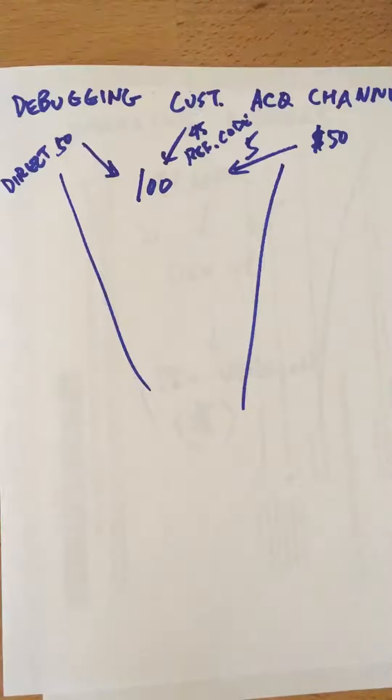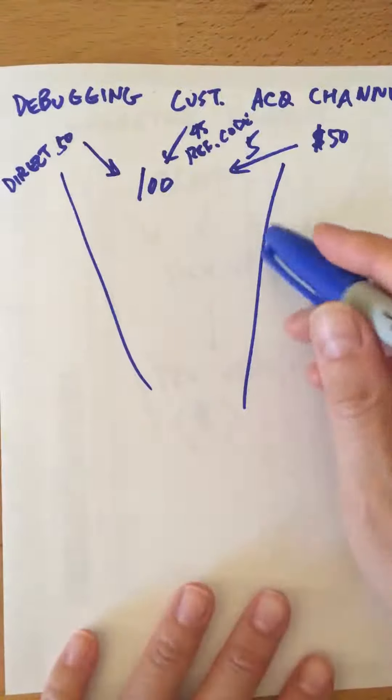So now let's talk about debugging customer acquisition channels. We have some of our initial data but we want to get more granular around those two things. We want to get granular around are we improving over time and how do our customer acquisition channels fare. So let's dig into that a bit.